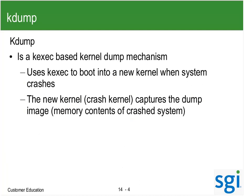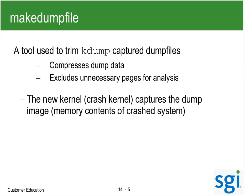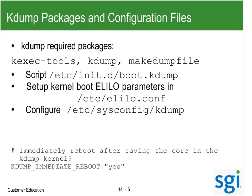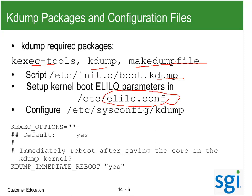KDump is a KExec-based kernel dump mechanism. It uses KExec to boot into a new kernel; the new kernel captures the dump and dumps it off to swap. During the boot process, a tool called MakeDumpFile compresses it. KDump requires KExec, KDump, and MakeDumpFile. There's a script in init.d for boot KDump. We have to set up the crash variable in elaudo.conf, and there's an /etc/sysconfig/kdump config file.